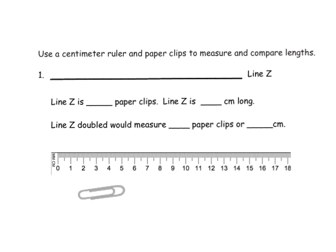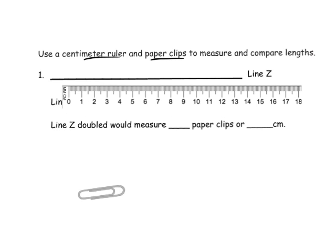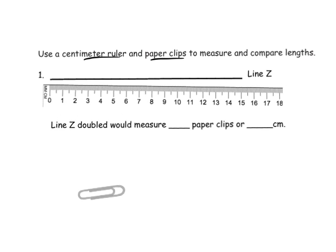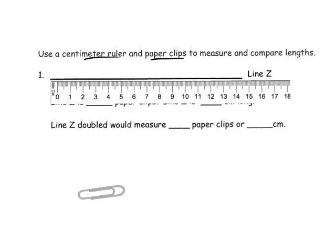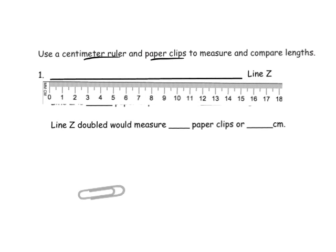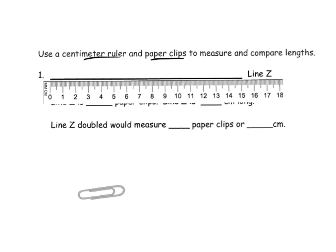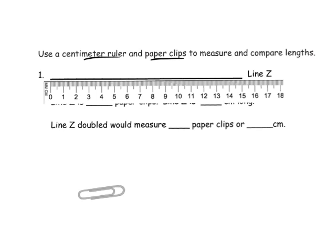So the first question says: use a centimeter ruler and paper clips to measure and compare the lengths. First thing we're going to do is use our ruler, and remember, we're going to line up our ruler not so that it lines up with the edge of the ruler, but so that the zero lines up with the edge of the line.